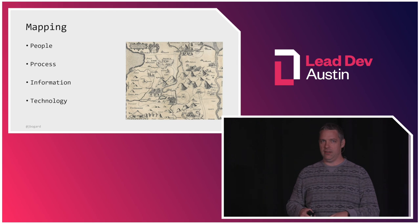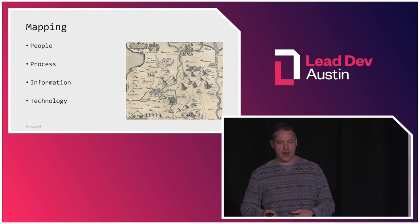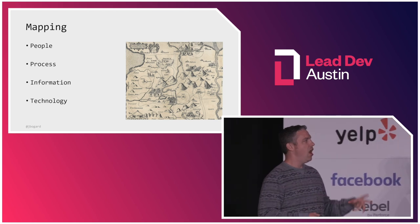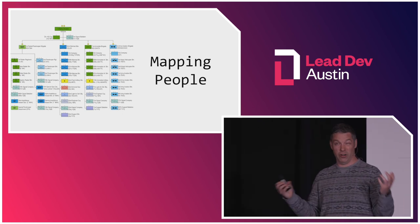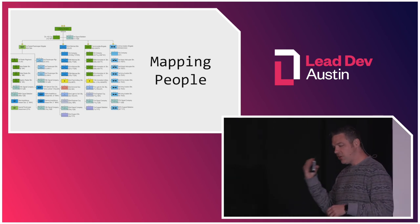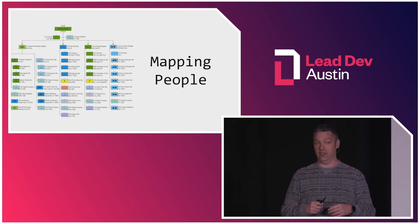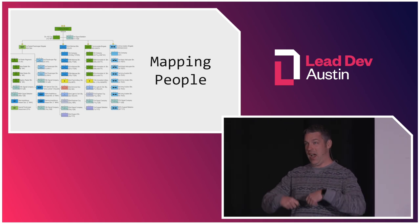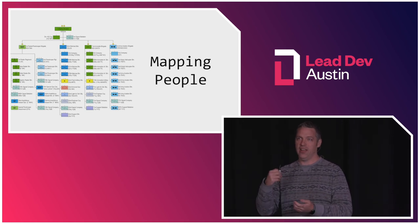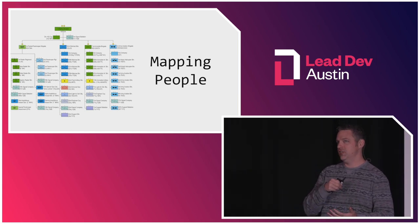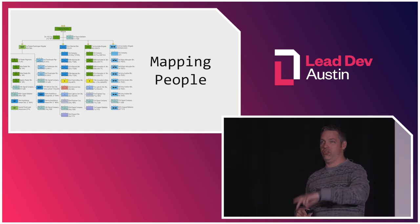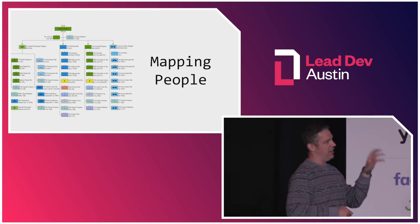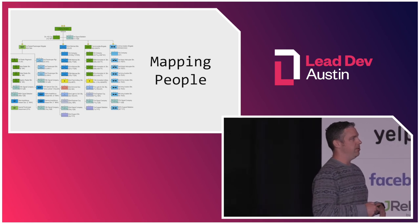As part of this process I'm performing a mapping exercise, mapping the people, processes, information, and technology around this system. Mapping people could be somewhat straightforward — look at org charts. But I'm trying to find potential champions inside the organization: people who, after I deliver for them, will advertise for me inside the company. I'm looking for domain experts who can answer the hard questions about what the system should or should not do.